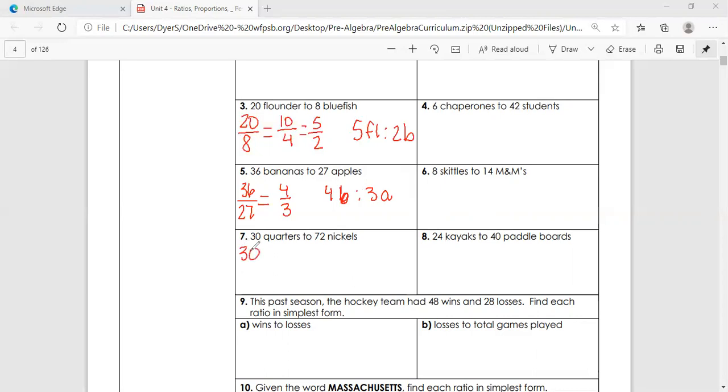Last one here. So we're going to have 30 to 72. So on this one, if you're not really good at coming up with the greatest common factor right off the bat, if it helps you start with two, divide by two on both of these. So that would give us 15 to 36. And now we look at that and we notice that three goes into both of those numbers. So we're going to divide by three and give us five to 12. That's our simplest form, five to 12. So we have five quarters to 12 nickels.